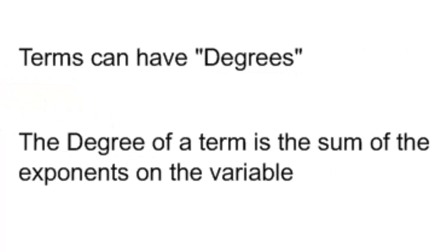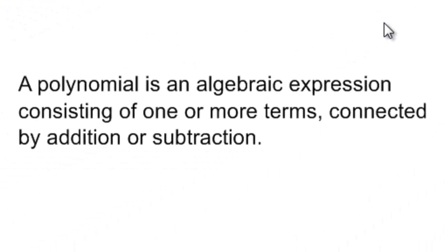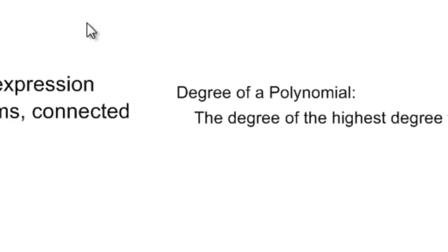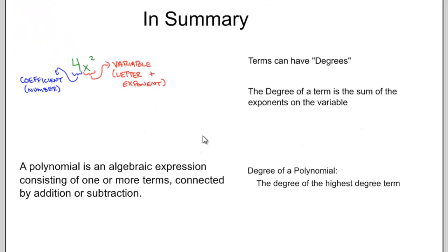These terms can have degrees. And we find the degree of the term by adding up all the exponents on the variable. A polynomial is an algebraic expression consisting of one or more terms, all connected by addition or subtraction. And just like we can find the degree of a term, we can find the degree of the polynomial by finding the degree of the highest degree term.